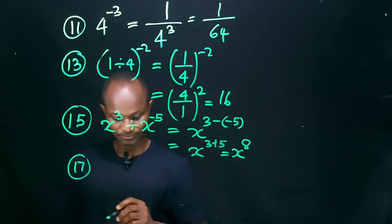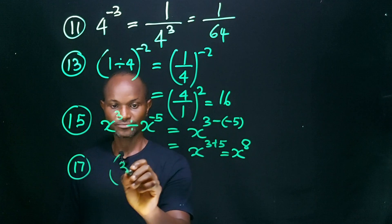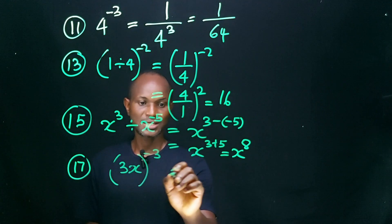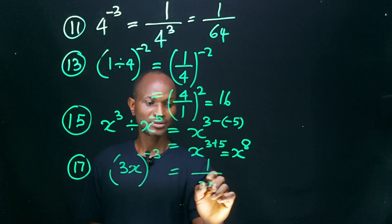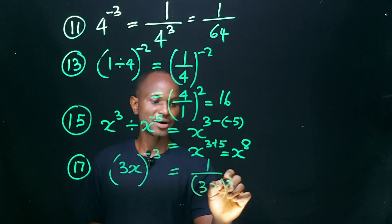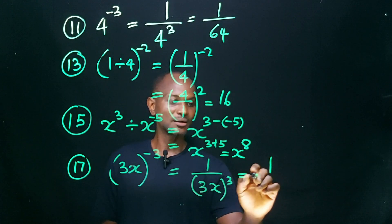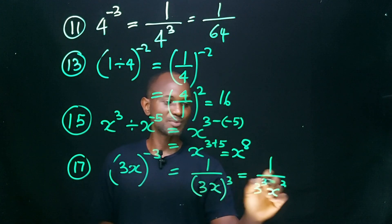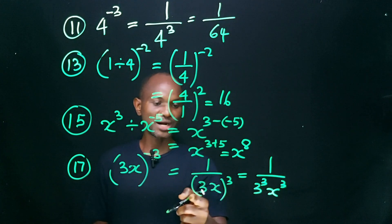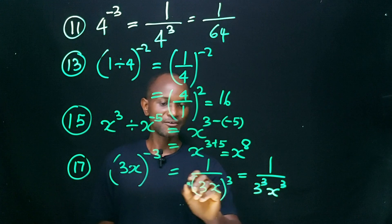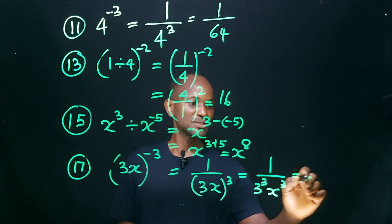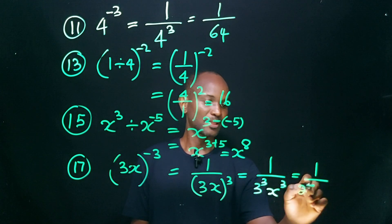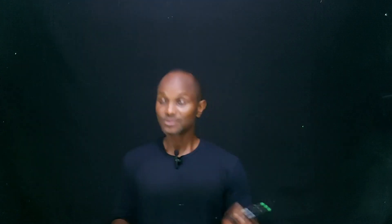Number 17: (3x) raised to power minus 3. This is the same as 1 over (3x) raised to power 3. To remove the bracket, we raise everything inside the bracket to the power of 3. This equals 1 over 3 cubed times x cubed, which is 1 over 27x cubed.